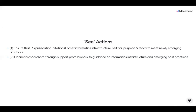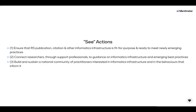Action two is to connect researchers through support professionals to guidance on informatics infrastructure and emerging best practices — both the materials and the availability of people delivering support. Action three is to build and sustain a national community of practitioners interested in informatics infrastructure and the behaviours that inform it. Communities inform and drive change; they develop and utilise shared assets and make change by demonstrating and benefiting from shared behaviours. Action four is to create the policy and incentives environment to encourage code availability, with the addressees of this video having a clear role in driving this agenda toward shared behaviours that can be captured as policy.